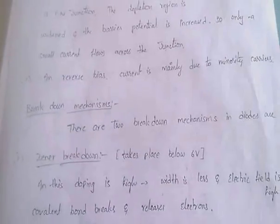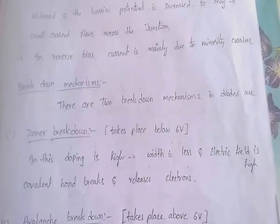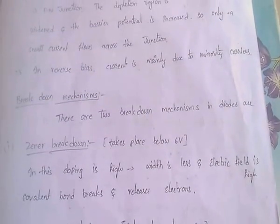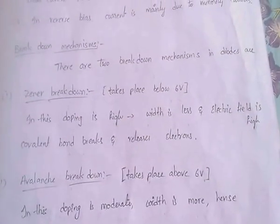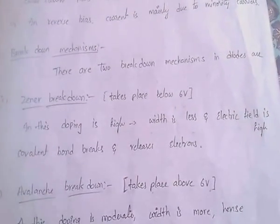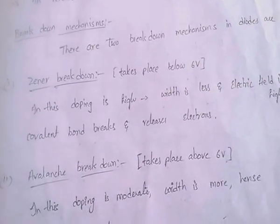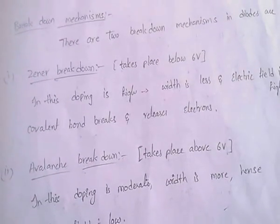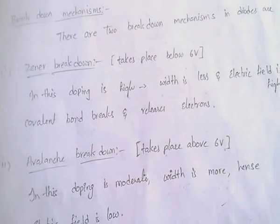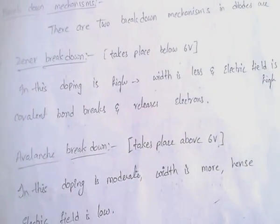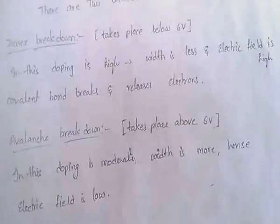Breakdown mechanisms in diodes: there are mainly two types of breakdown mechanisms — Zener breakdown and avalanche breakdown.